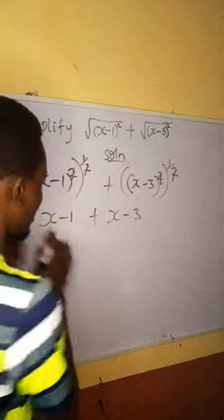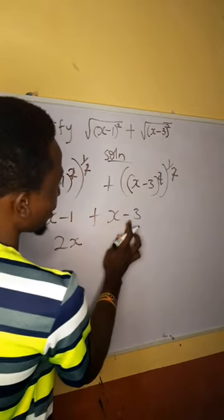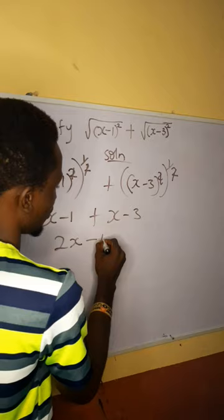So what do I do? I will collect like things. x plus x will give me 2x. Then minus 1 minus 3 is going to give me minus 4. And you are done! Bye bye!